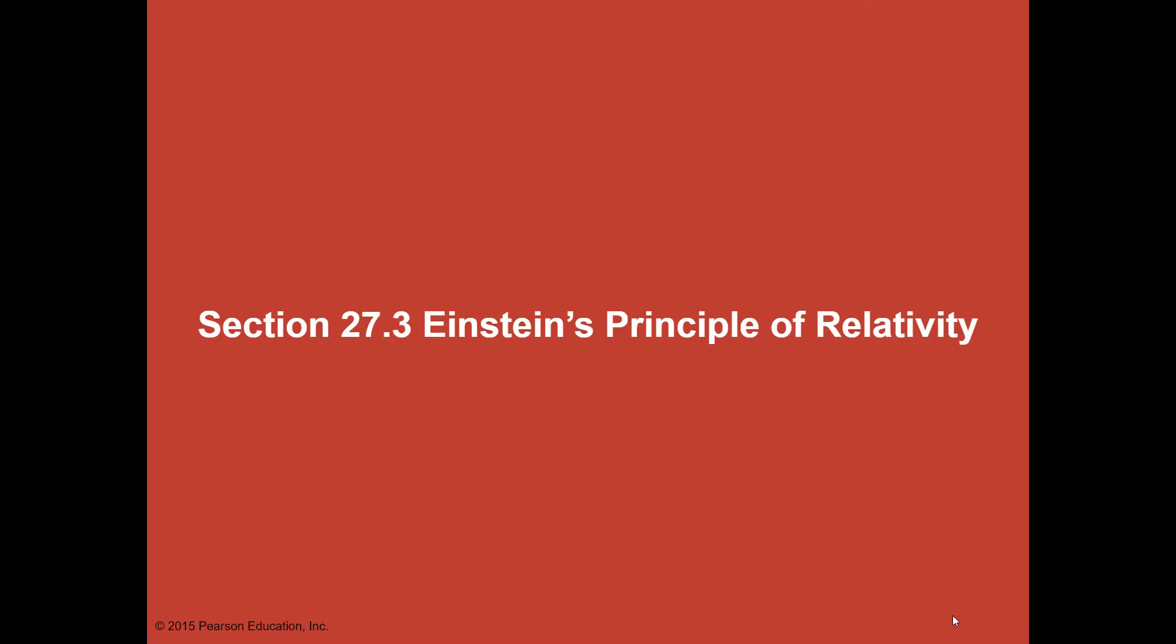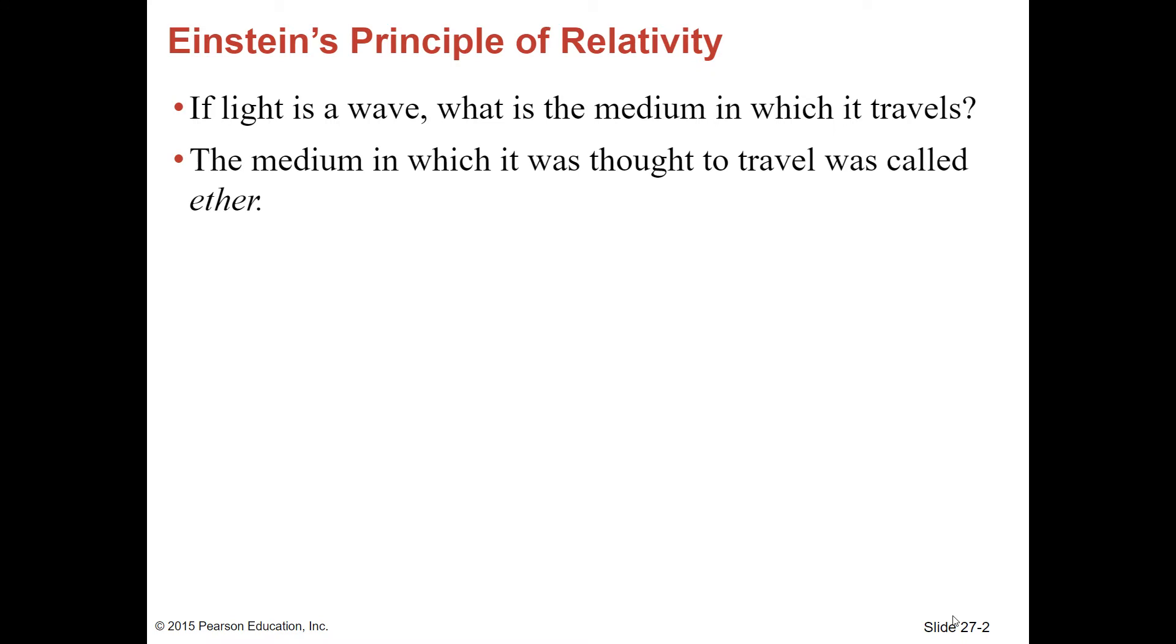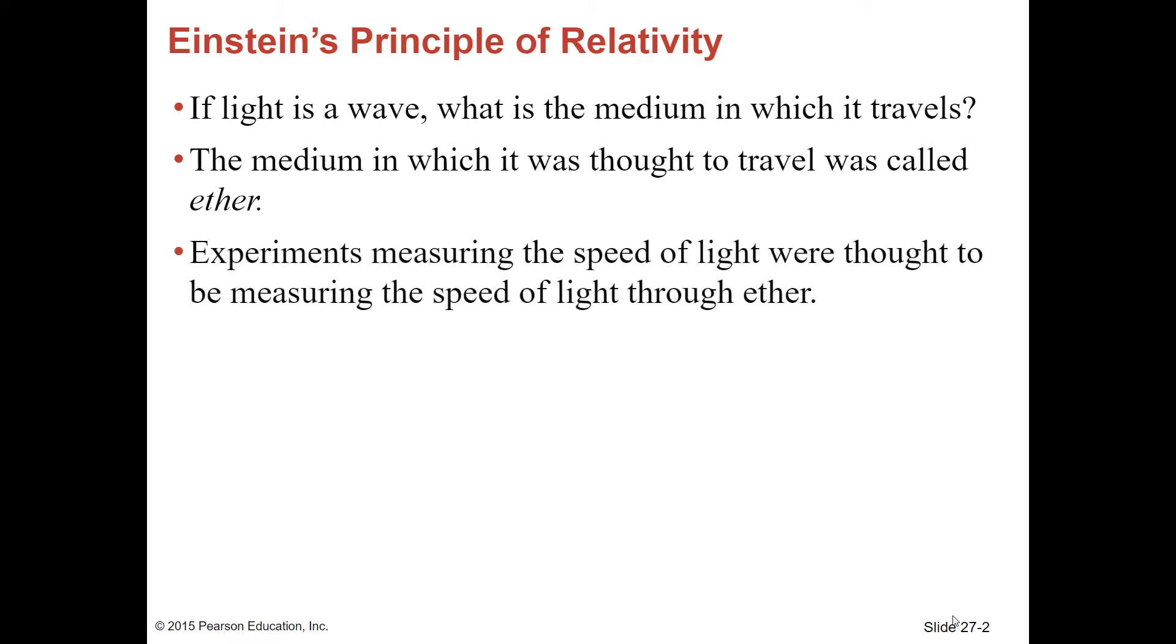Now let's focus on Einstein's Principle of Relativity. If light is a wave, what is the medium in which it travels? The medium in which it was thought to travel was called ether. Experiments measuring the speed of light were thought to be measuring the speed of light through ether.